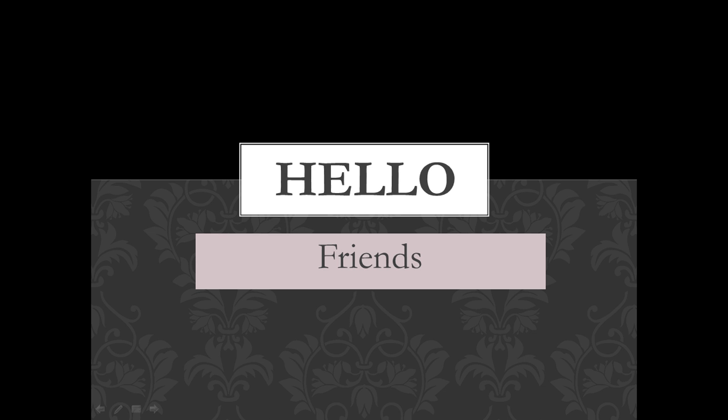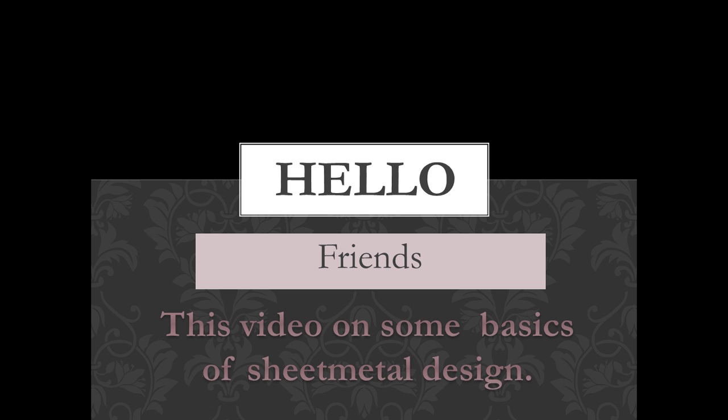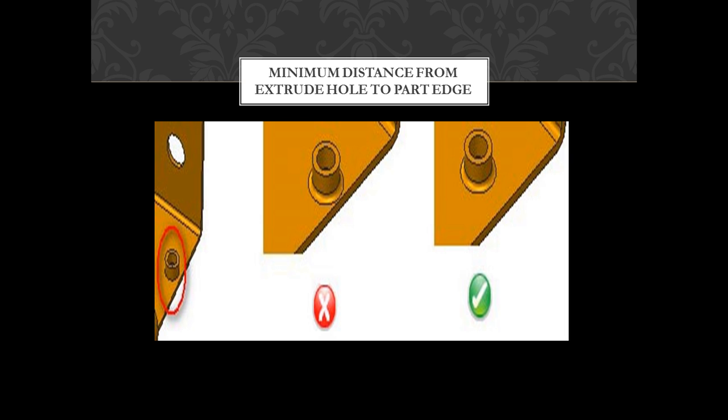Hello friends. Minimum distance from extruded hole to part edge: Extruding metal is one of the most extreme pressure applications in sheet metal working and generates lots of friction and heat. If an extruded hole is too close to the part edge, it can lead to deformation or tearing of the metal. It is recommended that the minimum distance between the extruded hole and part edge should be at least three times the thickness of the sheet.